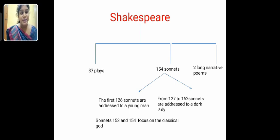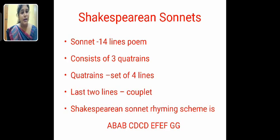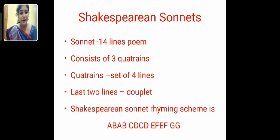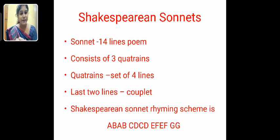In the sonnets addressed to the dark lady, he talked about how love makes him suppressed and depressed. Sonnets 153 and 154 focus on the classical god. Now, a sonnet consists of 14 lines and has three quatrains. If you see the structure of the poem, it has three quatrains — a quatrain meaning a set of four lines.